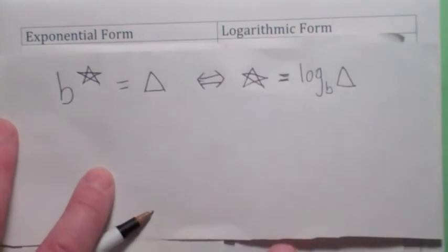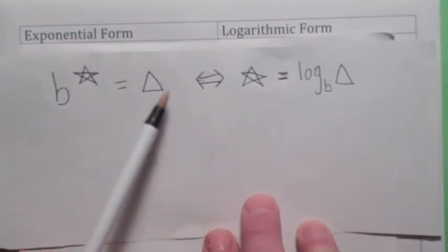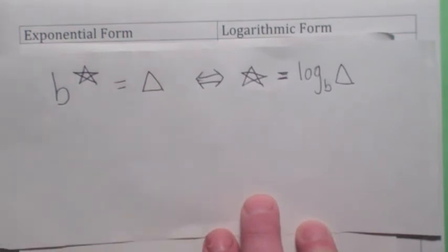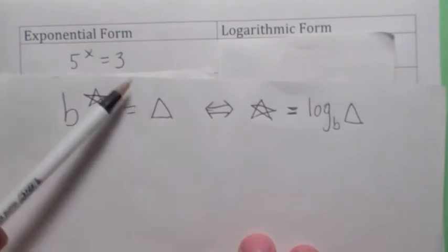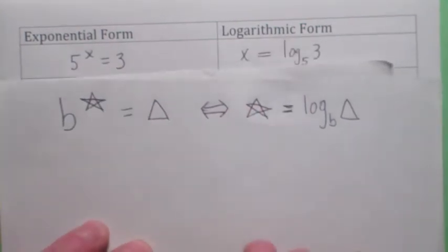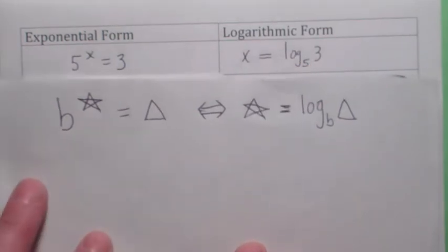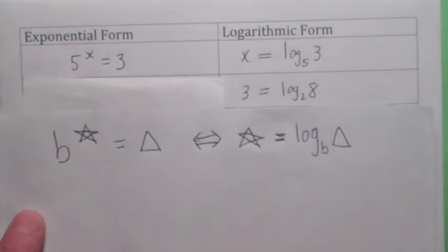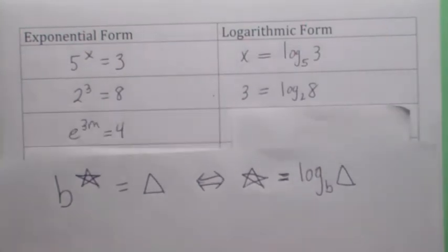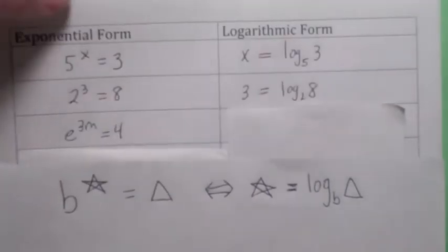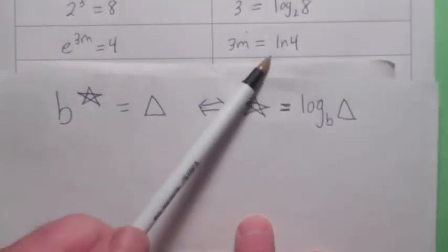One of the first things you really have to get comfortable with is the basic definition of the logarithm function. Every exponential equation can be written as a logarithmic equation, and vice versa — so get comfortable going back and forth. For example, if you're given the exponential equation 5 to the x equals 3, think of x as star, 5 as b, and 3 as triangle. You'd get x equals log base 5 of 3 — notice the base of the logarithm is the same as the base of the exponent. This is a log equation which we can write in exponential form as 2 to the third equals 8. The exponential equation e to the 3m equals 4 could be written as 3m equals the natural log of 4 — since b is e, we write ln instead of log base e.